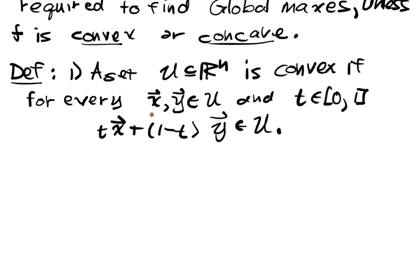That is, for every pair of points in u, the line segment adjoining them also is in u, that entire line segment.